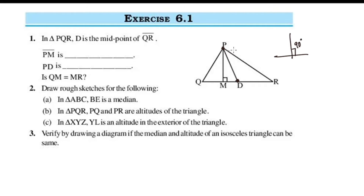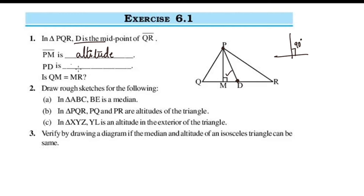What is PM? P is the vertex, and it meets the opposite side QR at a perpendicular — so PM is the altitude, and P is at 90 degrees. What is PD? D is the midpoint of QR, so PD is the median.